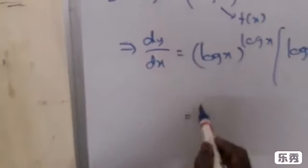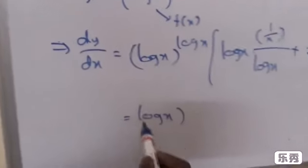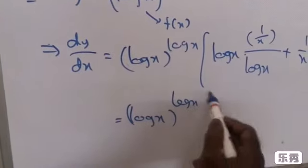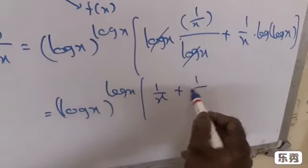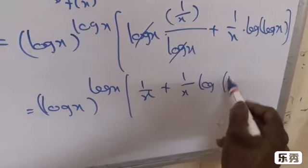Therefore the answer is (log x)^(log x) times [1/x plus (1/x) log(log x)].